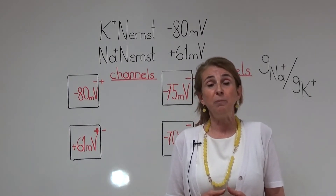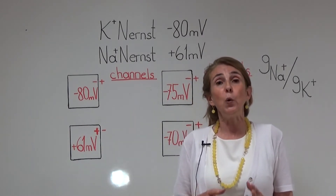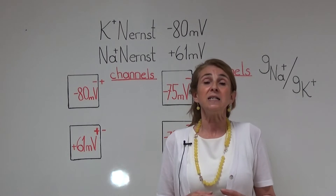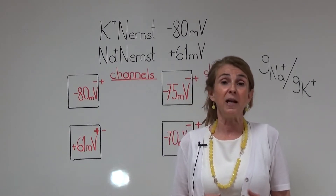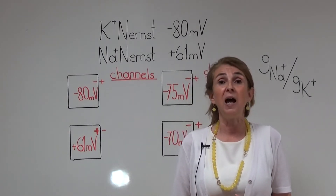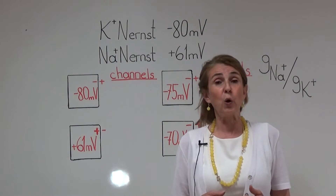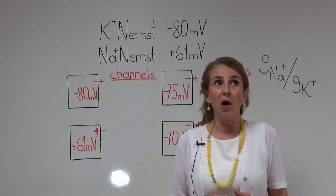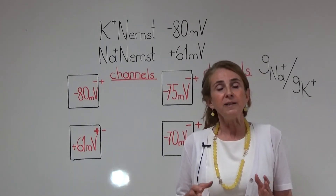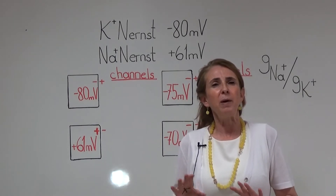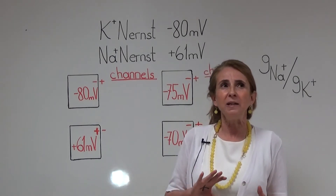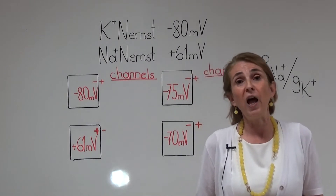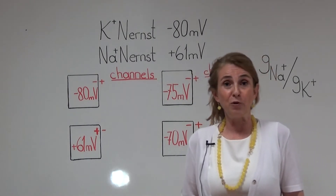During the resting membrane potential in all cells of our body, the inside of the cell membrane has more negative charges compared to the outside. Until now, resting membrane potentials from minus 80 mV to minus 200 mV have been measured.